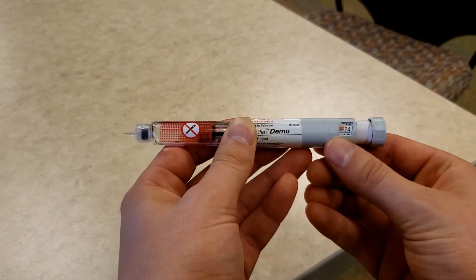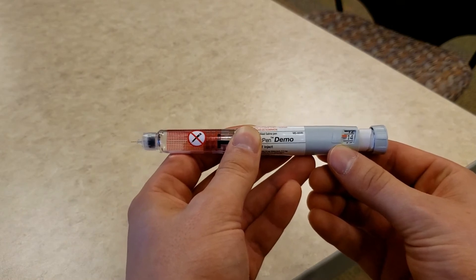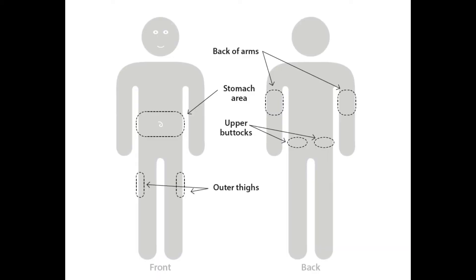Now we are ready to inject the insulin. The stomach is the most common place to inject insulin. Just make sure to stay at least an inch away from your belly button. This picture shows the other places that you can also inject insulin into your body.